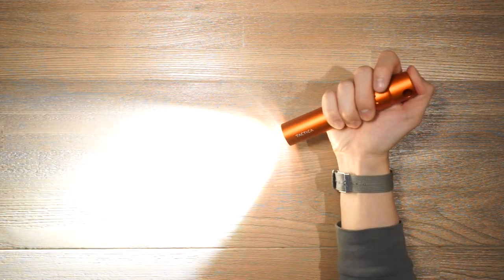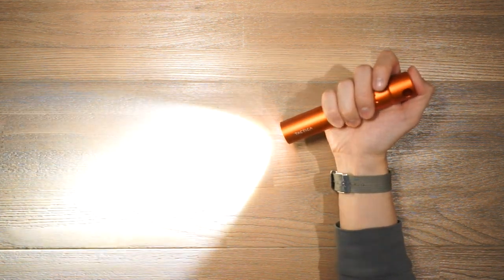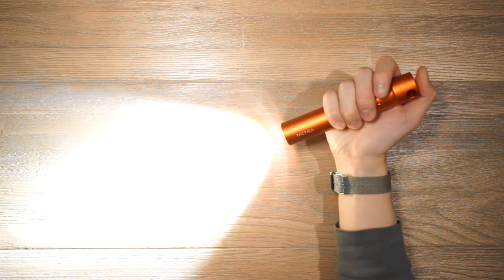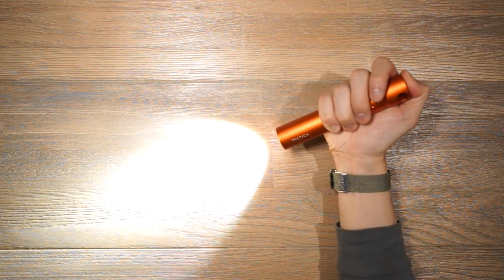Now if you keep pressing on the tail cap switch you'll keep rotating through those different variable brightnesses so you can keep changing to whatever luminosity you require and then when you want to turn off the flashlight you simply hold on for a few seconds and it turns off.